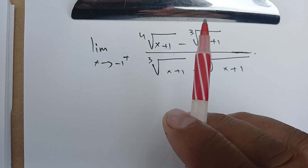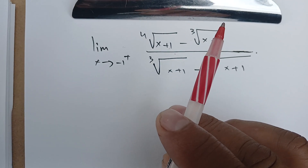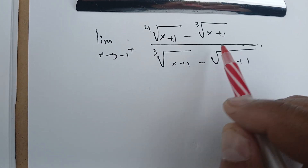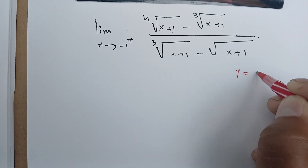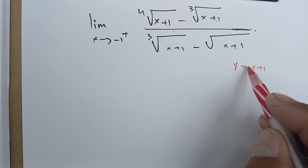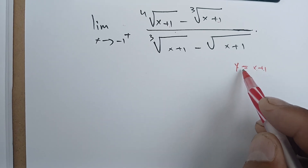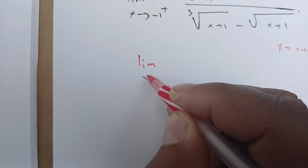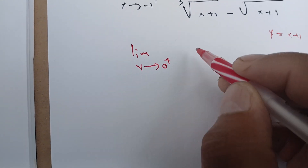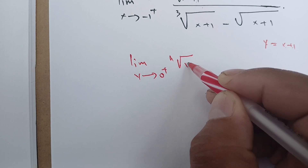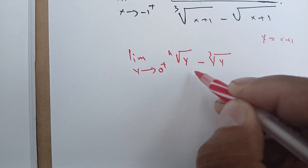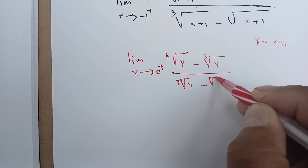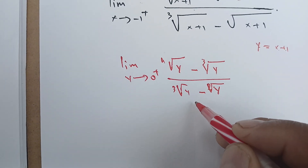We don't want to keep writing x+1 repeatedly, so we let y = x + 1. As x goes to minus one from the right, y goes to zero from the right. Rewriting the limit, as y→0⁺ we have the fourth root of y minus the cube root of y, over the cube root of y minus the square root of y — written using fractional power notation.